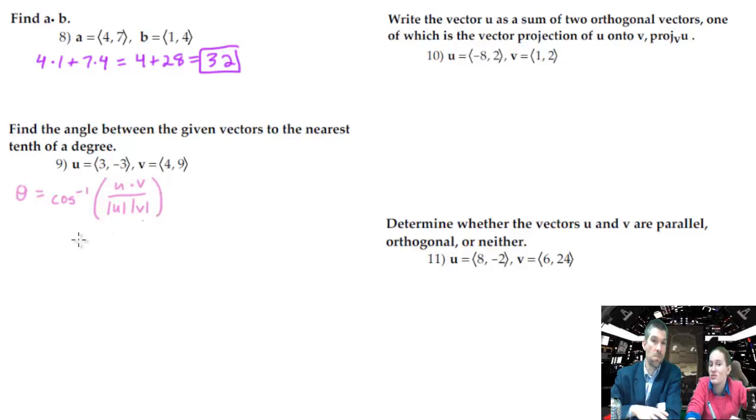We need to do u dot v, the magnitude of u, and the magnitude of v. And you don't want to carry any decimals through on this. So, when you punch it down on your calculator, you want to leave it totally radicalized. Let's see what happens with the dot product. First times first plus second times second, and that gives you 12 minus 27, which is negative 15.